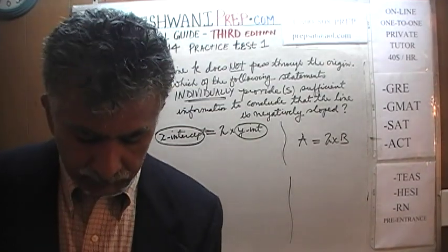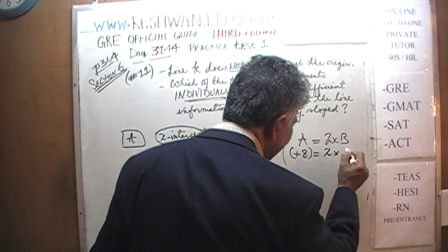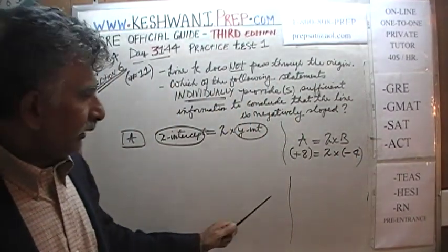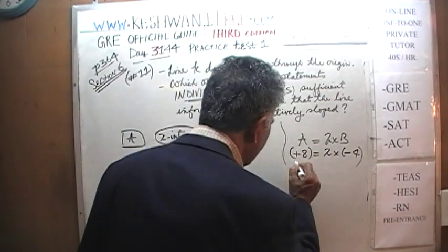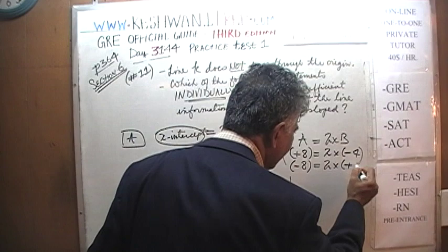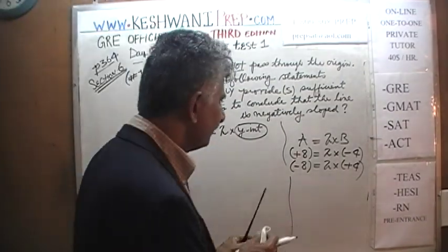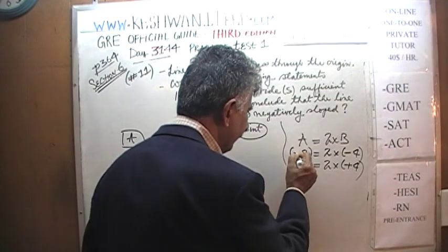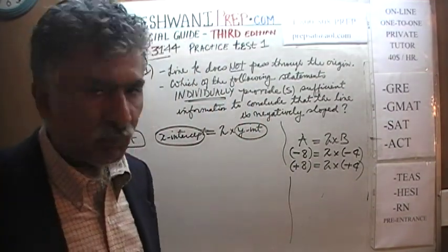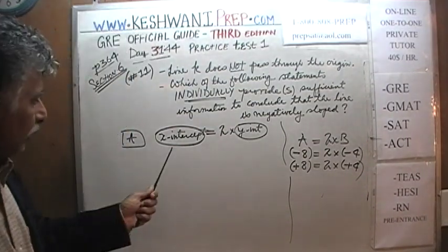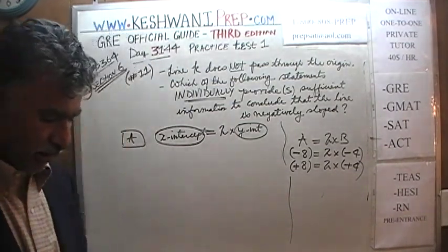What do we get out of it? Is it possible for A to be positive 8 and B to be negative 4? That's not possible. If A equals 2 times B, it is not possible for them to take opposite signs. It is not possible for A to be negative 8 and B to be positive 4. They cannot take opposite signs.